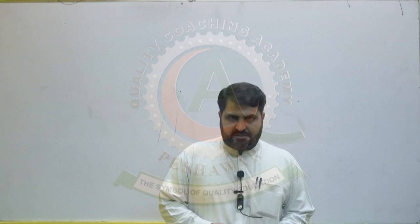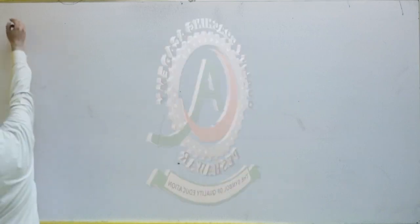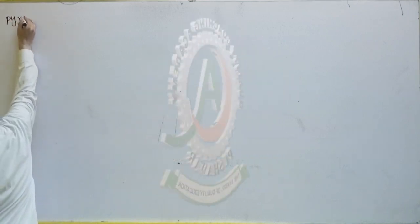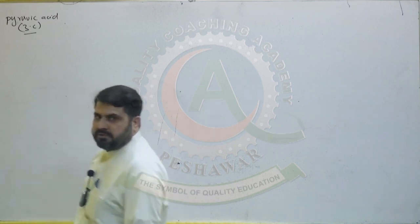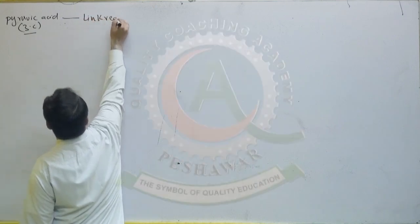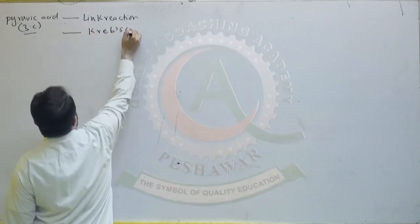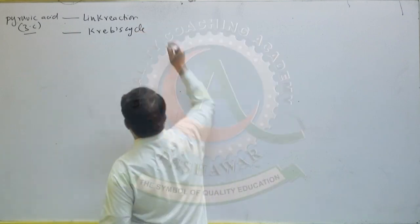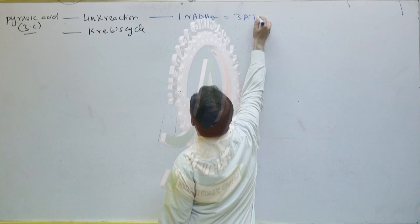We are going to continue with the next lecture regarding bioenergetics linked with the respiration topic. If someone asks how many ATP are produced from pyruvic acid — pyruvic acid is a three-carbon compound. This pyruvic acid first enters the link reaction, then from the link reaction it is passed through the Krebs cycle. During the link reaction, one NADH2 is produced, which gives three ATP.